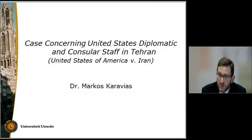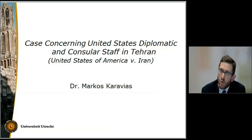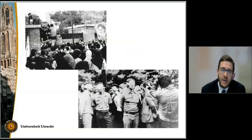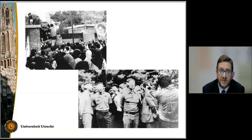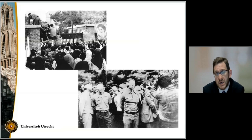Hello and welcome to this knowledge clip on the International Court of Justice judgment in the case concerning United States diplomatic and consular staff in Tehran, also referred to as the Tehran hostages case. The dispute between the United States and Iran arose out of the seizure of the United States embassy in Tehran and the taking of United States diplomatic and consular staff as hostages by a group of militant demonstrators on November 4, 1979.